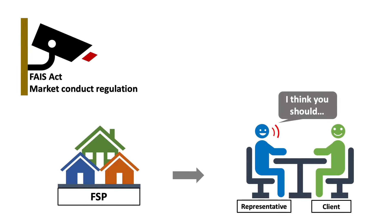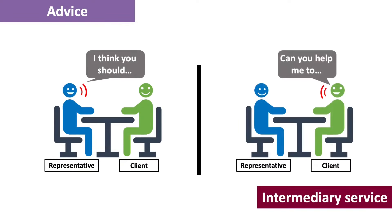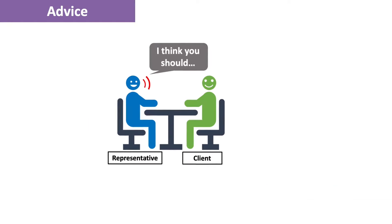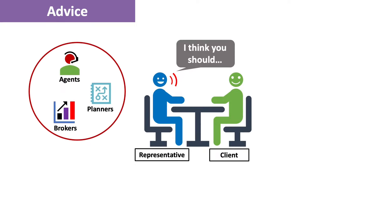We now know that the FACE Act regulates the business of FSPs and the conduct of its Key Individuals and Representatives, who give advice and/or provide intermediary services to clients. Let's explain in more detail what advice is and what intermediary service is. Advice is essentially when an FSP, its KI and representatives — who are agents and brokers — give financial advice to clients.